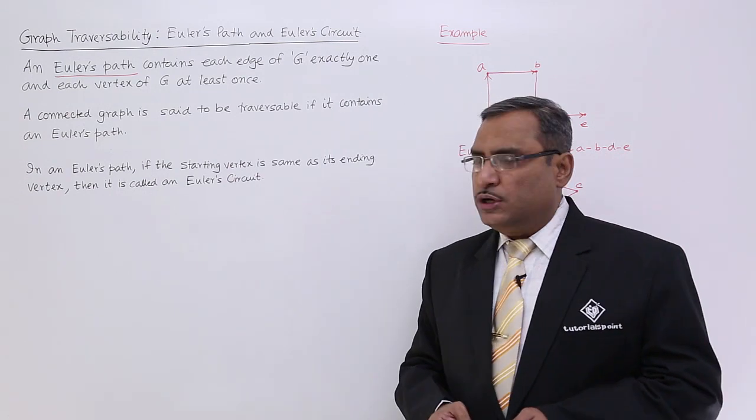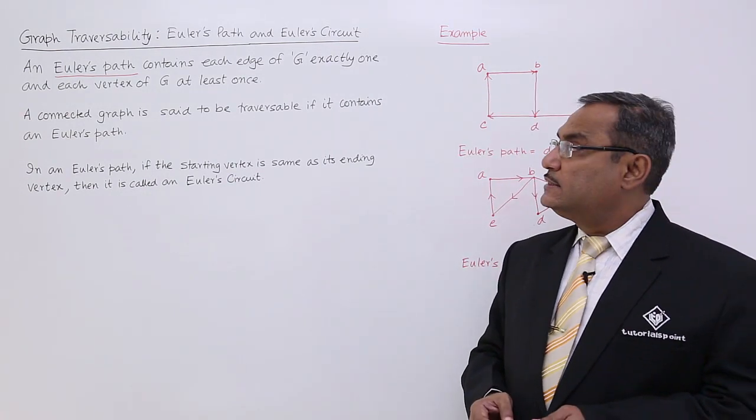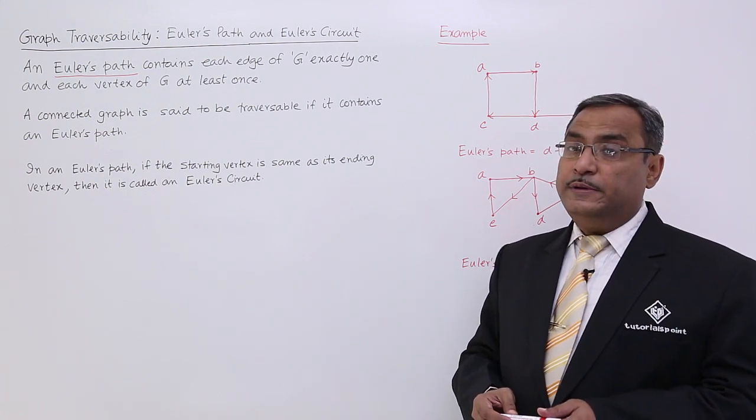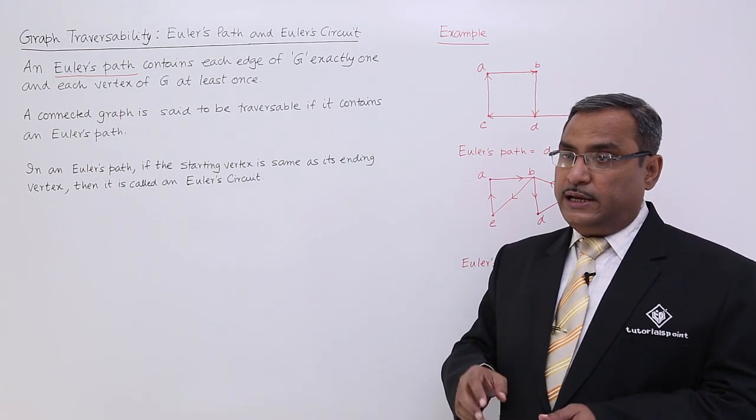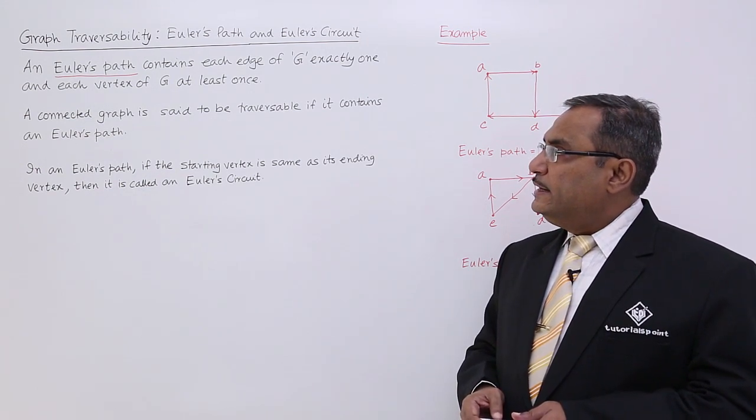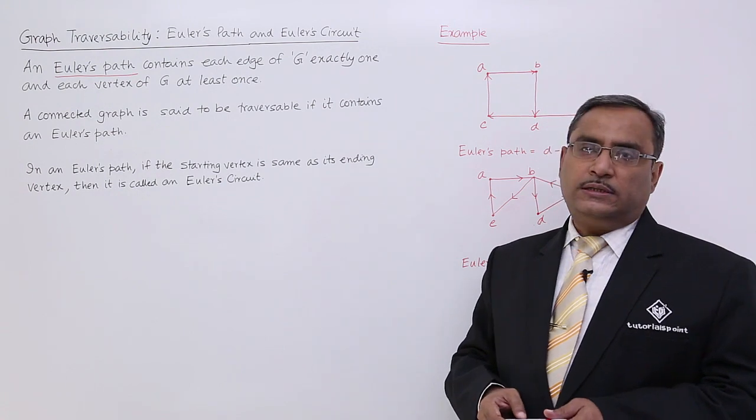The definition of Euler's path is: an Euler's path contains each edge of G exactly once and each vertex of G at least once.